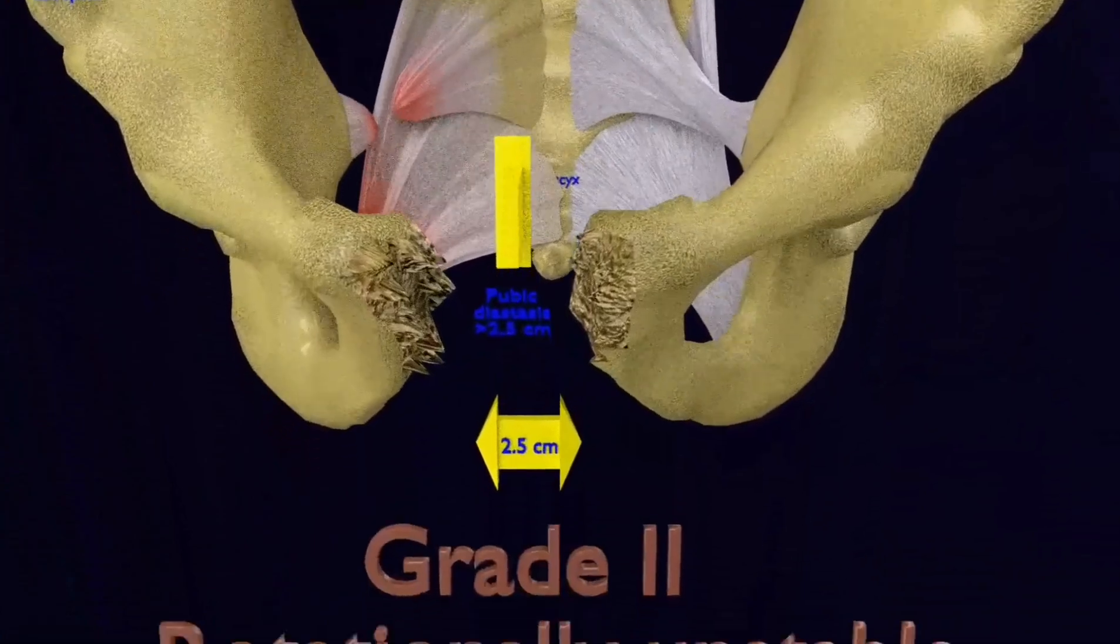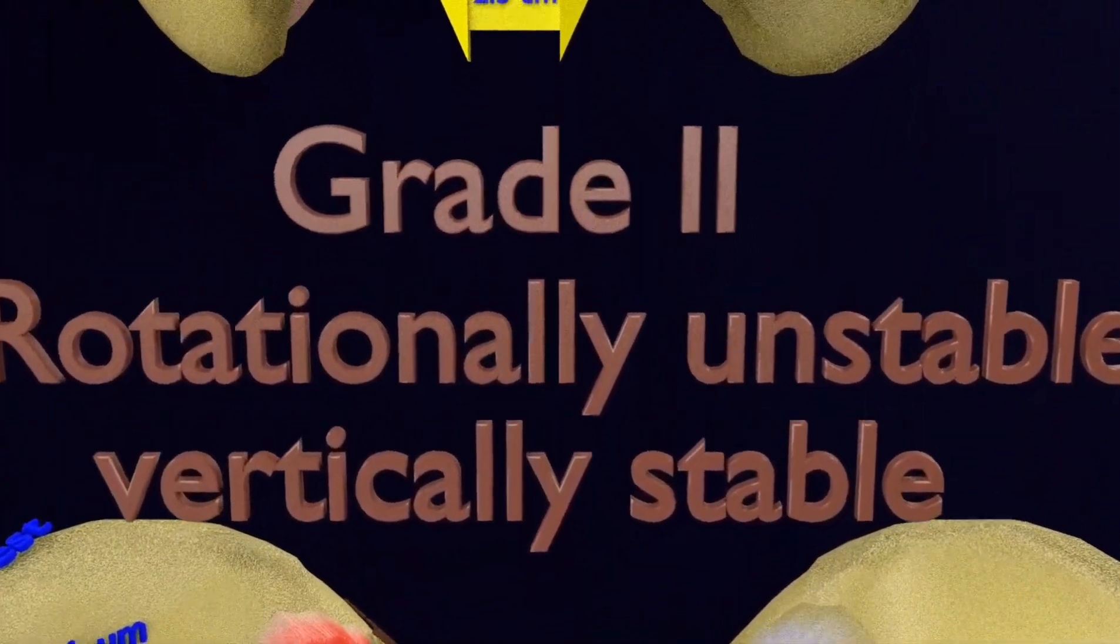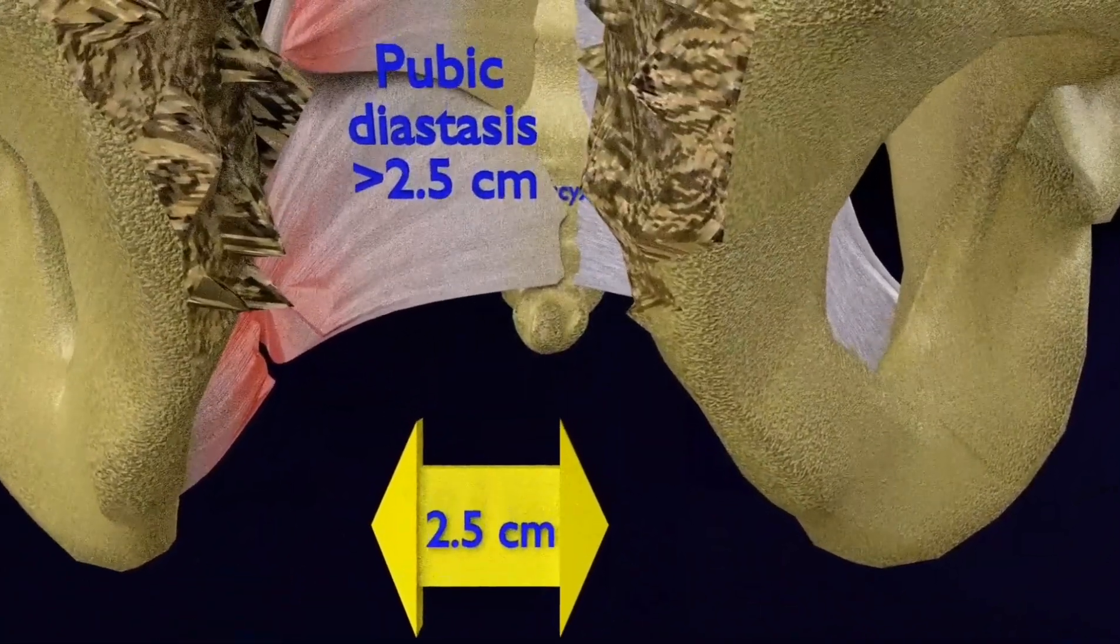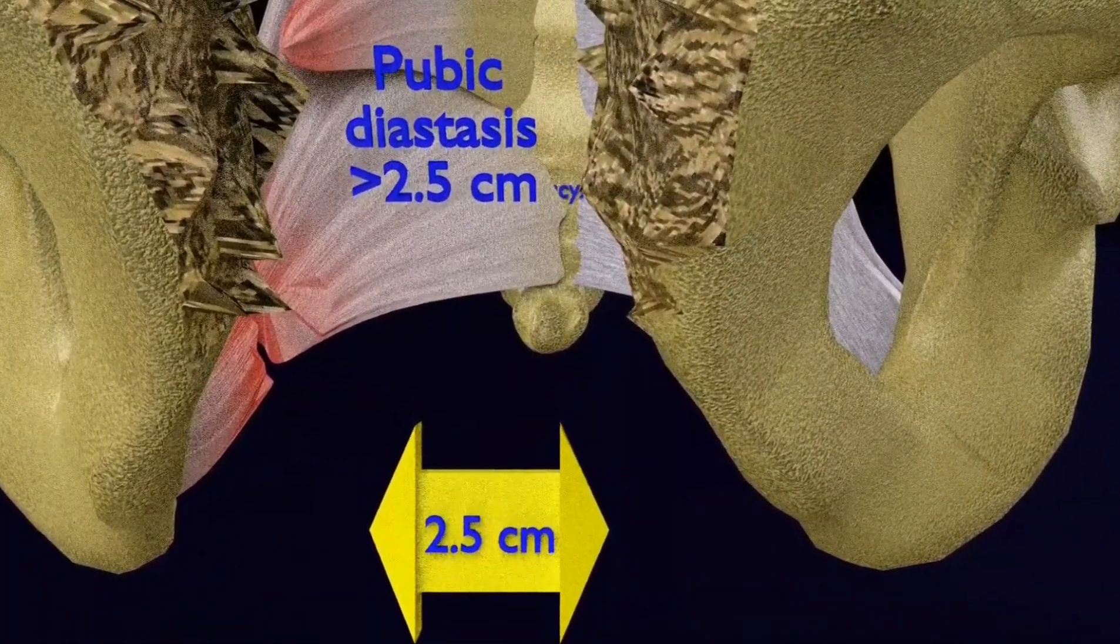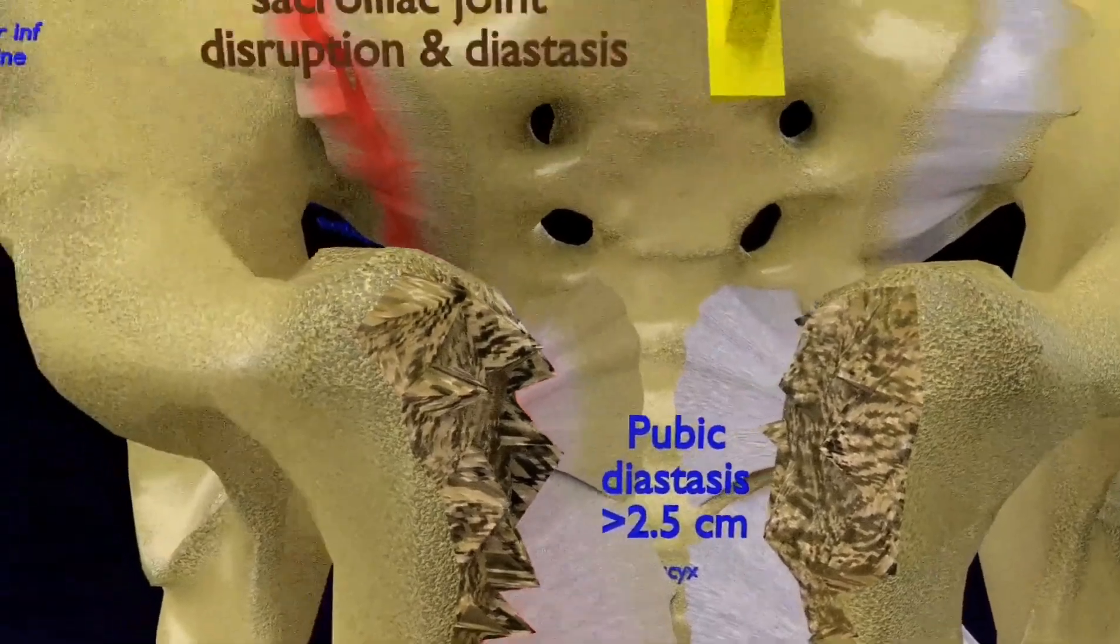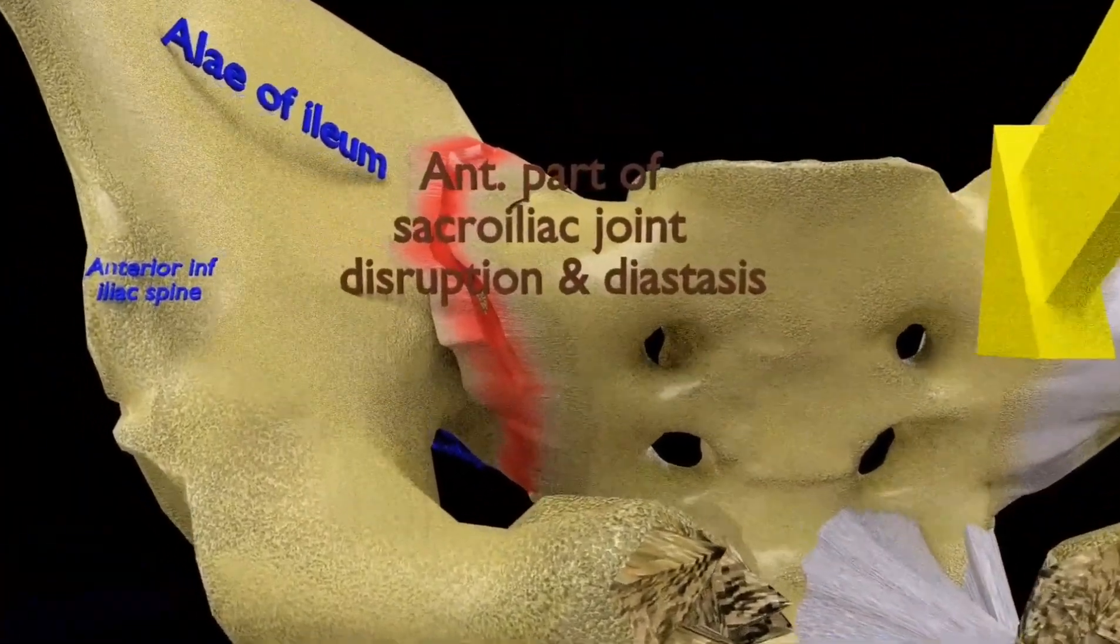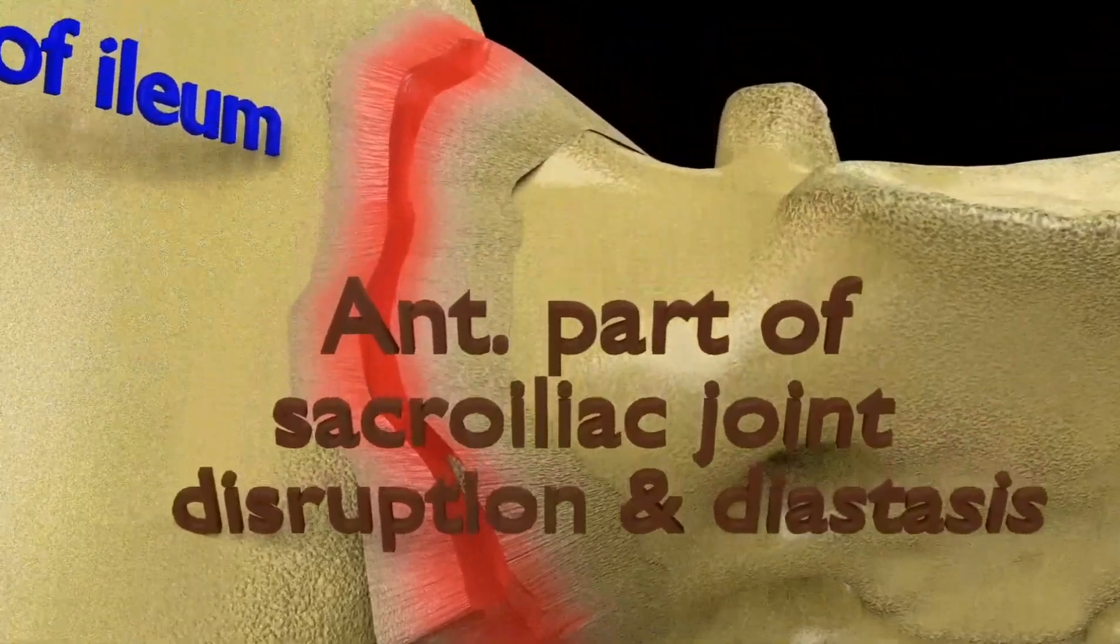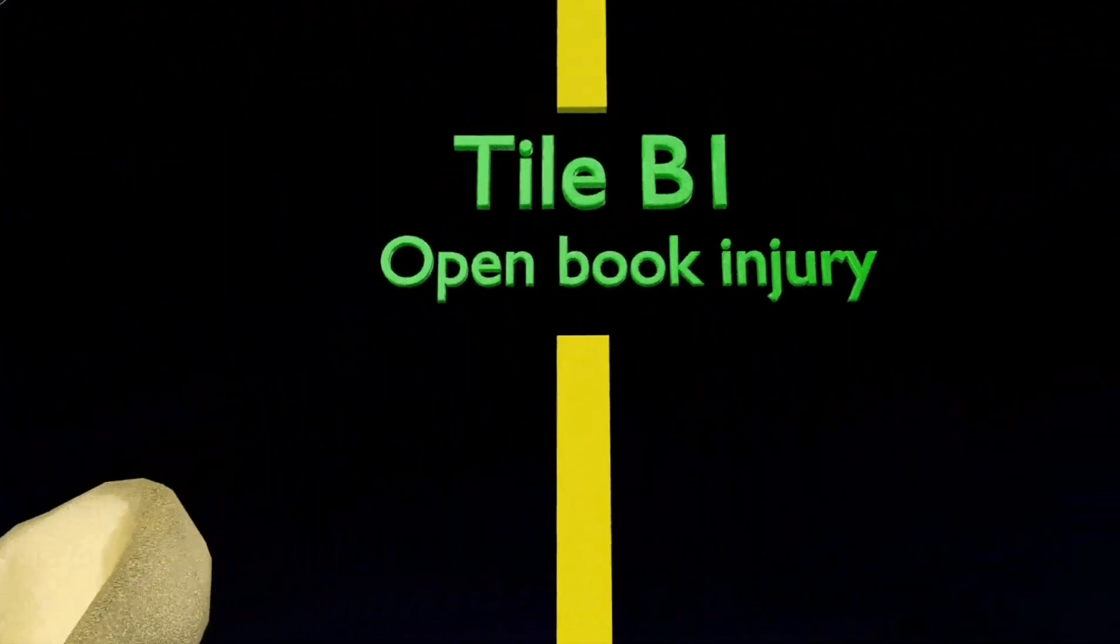You visualize here the grade 2. It is rotationally unstable and vertically stable. The pubic diastasis is more than 2.5 cm. Disruption and diastasis of the anterior part of the sacroiliac joint with intact posterior sacroiliac joint ligaments.